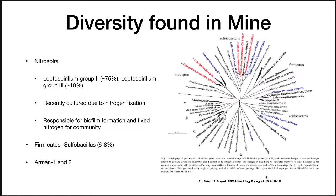They did 16S ribosomal RNA sequencing — amplicon sequencing — and found that one of the major groups was Nitrospira. 75% of the biomass was Leptospirillum group 2, and 10% was Leptospirillum group 3. They recently cultured this group due to its ability to fix nitrogen, which they discovered through further DNA analysis, and found it's responsible for biofilm formation and nitrogen fixation for the community.